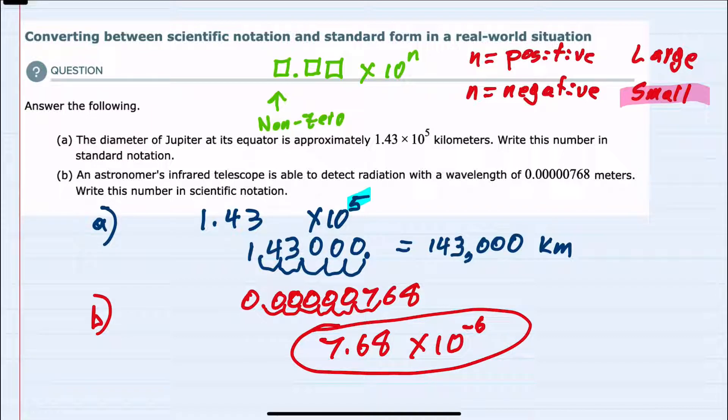Whether we're going from standard to scientific or scientific to standard, recalling that when n is positive that's a large number, and when n is negative that's a small number, should help us make sure we have the right signs and the right direction of movement for our decimal.